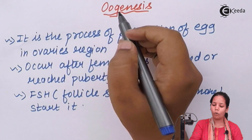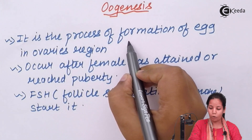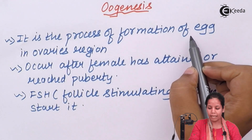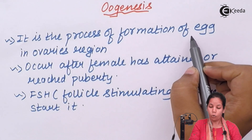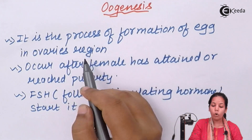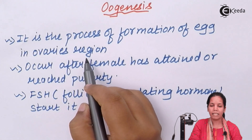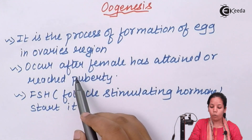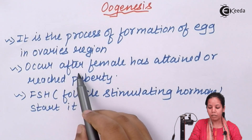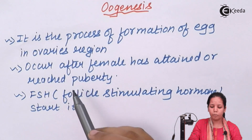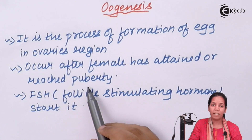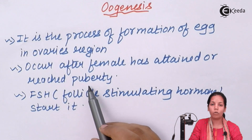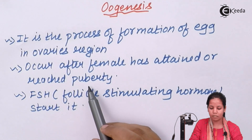Oogenesis is the process of formation of eggs or ovum in the ovary region of the female reproductive tract. It occurs after the female has attained puberty, at which point the menstrual cycle or the bleeding process also starts.